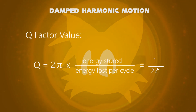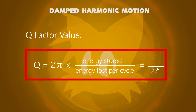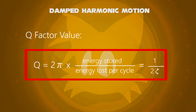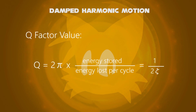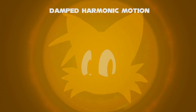Finally, the Q-factor of a damped oscillator is defined as Q equals 2π times energy stored per unit energy lost per cycle, which is also equal to 1 over 2 zeta. In this topic we have briefly discussed damped harmonic motion.